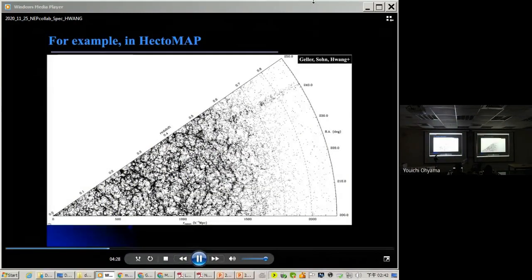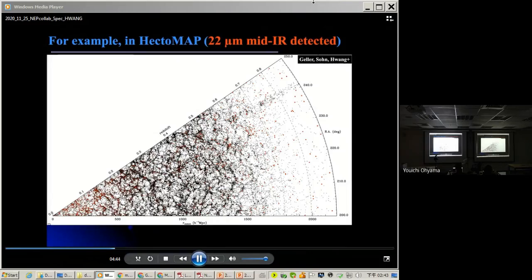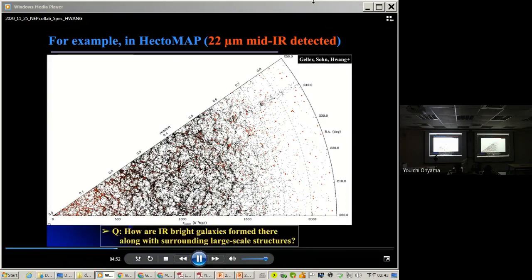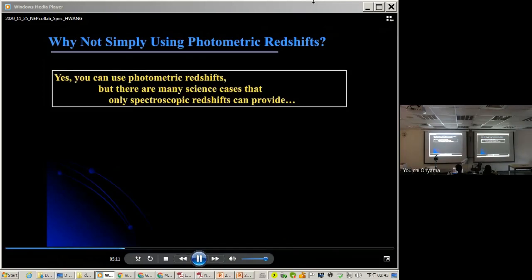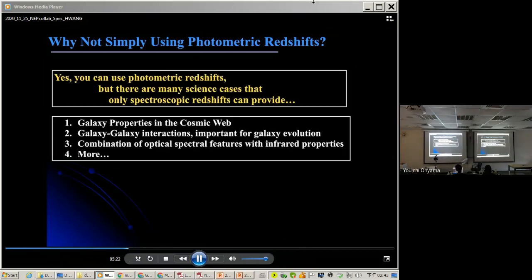Speaking of redshift surveys, for example, this is a HectoMAP redshift survey. You can see lots of galaxy clusters. So you can see the evolution of large-scale structures. Then, if you plot 9-micron, mid-infrared detected galaxies, the red points, many galaxies are there. And the question that you can ask: how are these infrared bright galaxies formed there along the surrounding large-scale structures? This question can be answered with spectroscopy from NEP wide field. Some people might ask, why not simply using photometric redshifts? Yes, we can do that. But there are many science cases that only spectroscopic redshifts can provide.